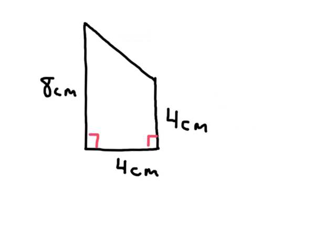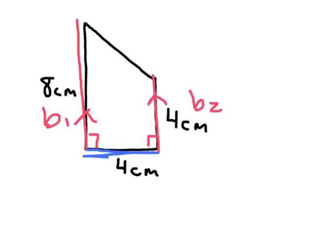Here's another one. This one looks a little different, but it is actually still a trapezoid — just turned on its side. We've got two sides that are parallel; those are the bases. So that's base one and base two, and between those two bases, the straight distance between them is the height of four.